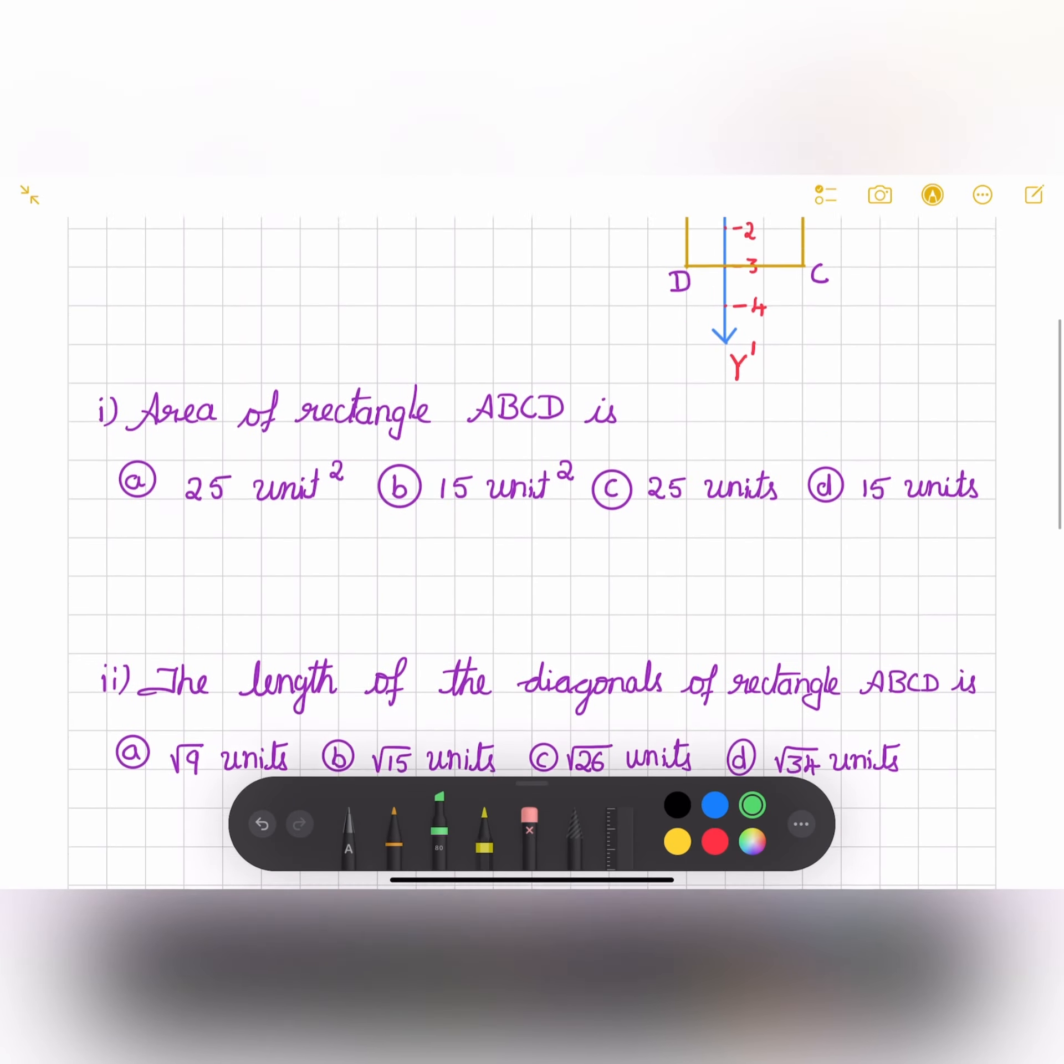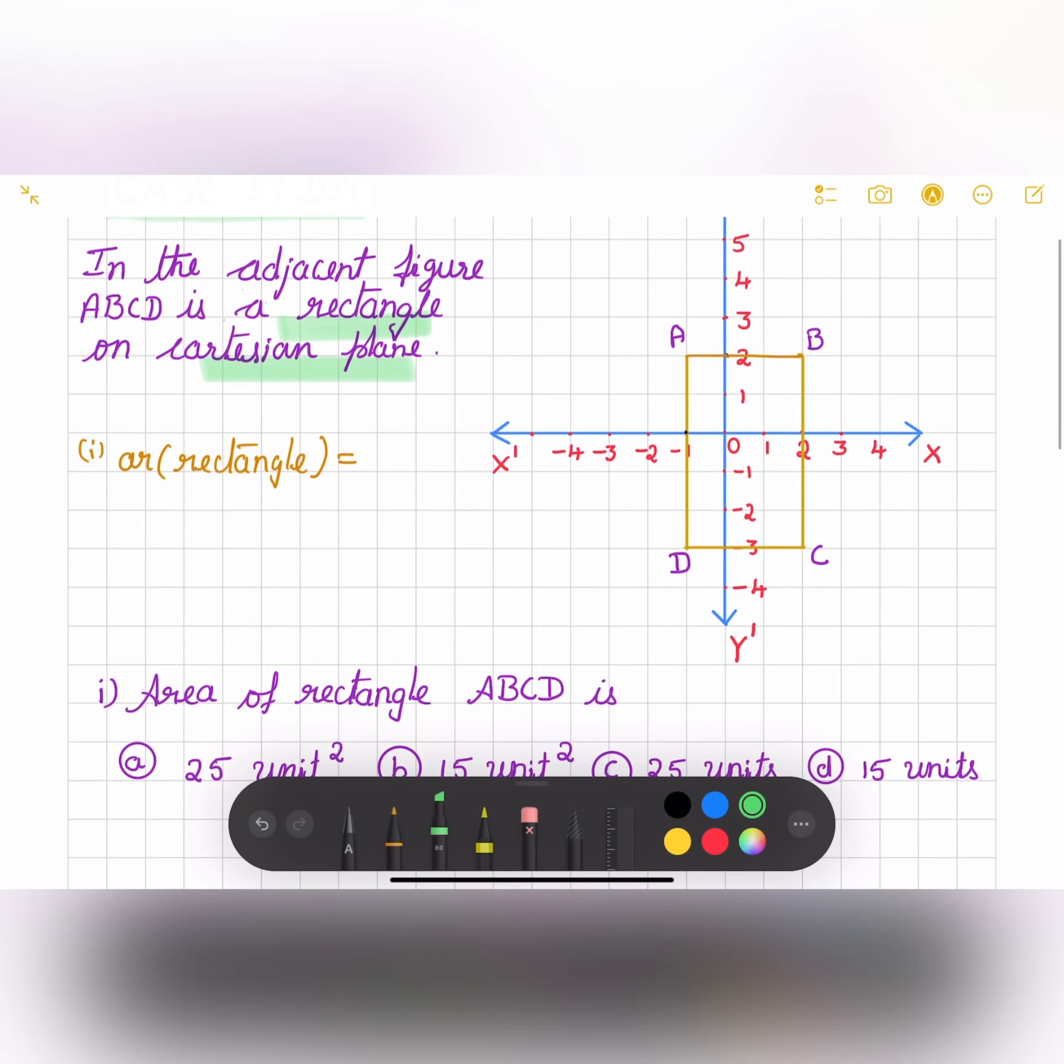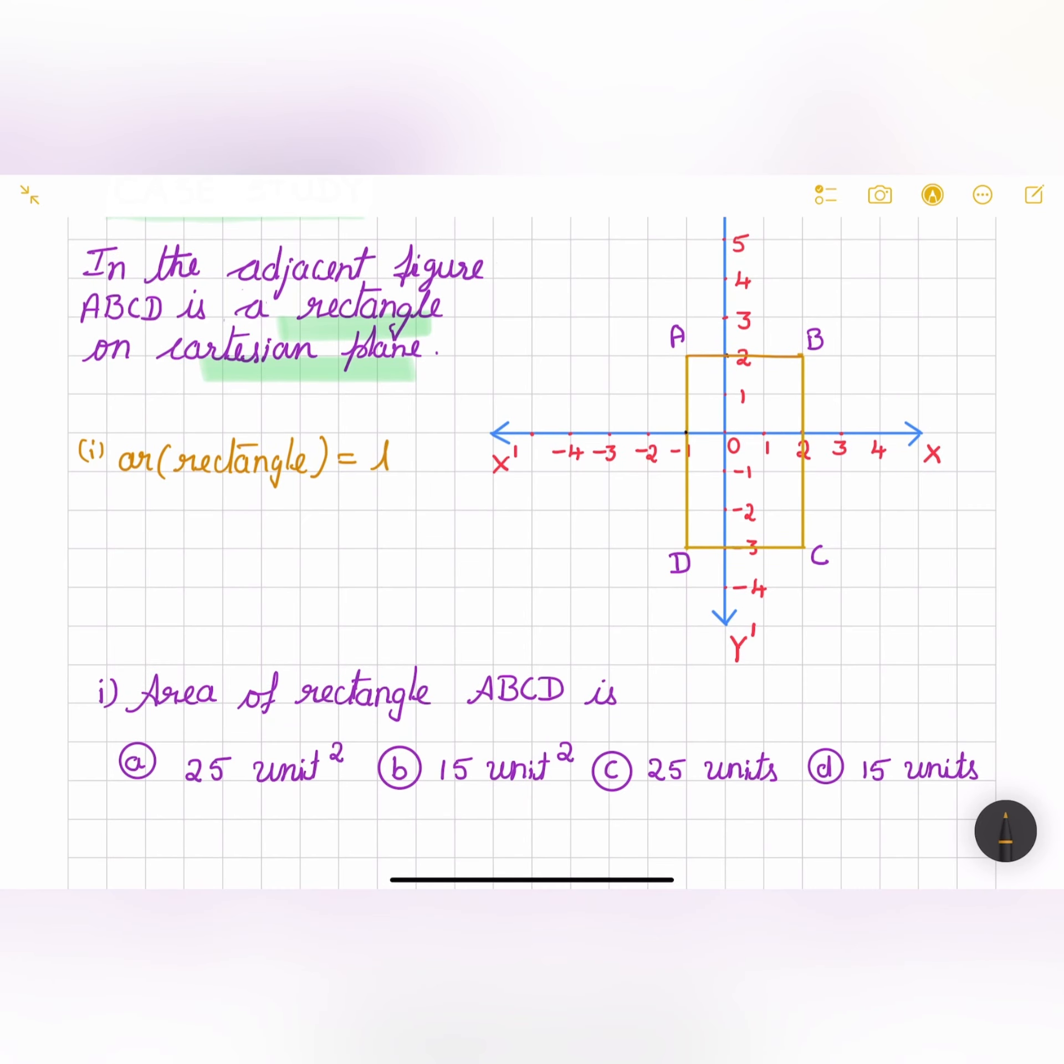Let us start with the first question. Area of rectangle ABCD is? We have four options. Let us find out. We know that the formula for the area of rectangle is length into breadth. What is the length of this rectangle ABCD? That is three units here. Length is three units and the breadth is five units.